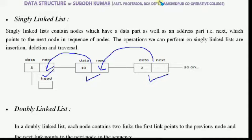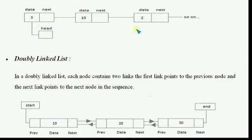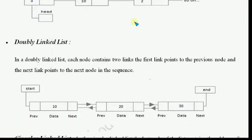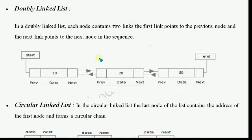The next one is doubly linked list. In doubly linked list, each node contains two links. The first link points to the previous node and the next link points to the next node in the sequence. So each node has two address parts apart from data: a previous pointer and a next pointer.